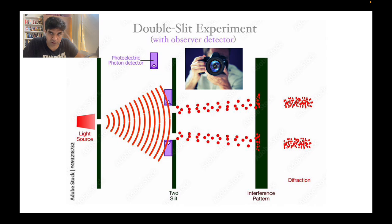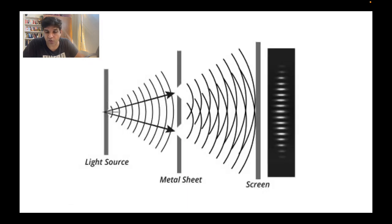Now something really interesting happened which basically amazed the entire scientific community. When they removed the camera and the person and the electron gun continued to fire, this is what happened: the same electron gun was firing from both slits, but what they saw was not two bands but multiple bands.